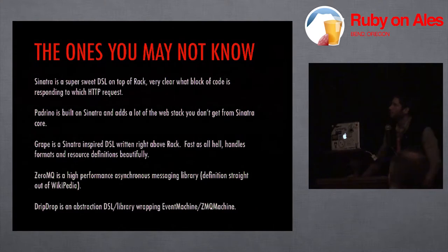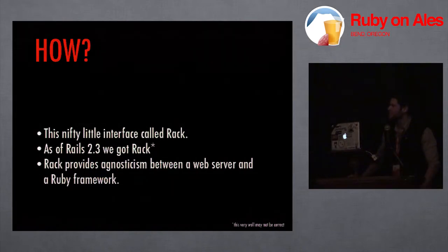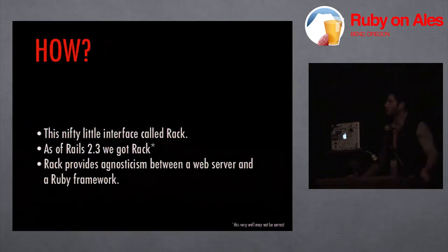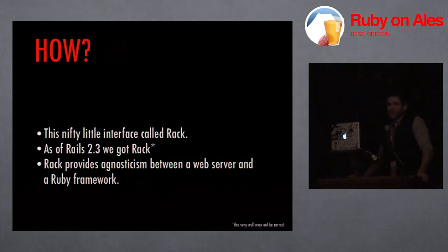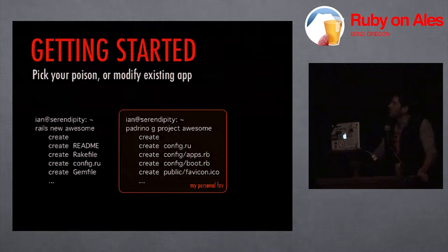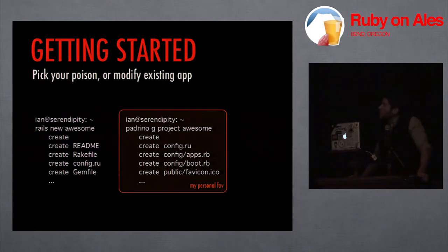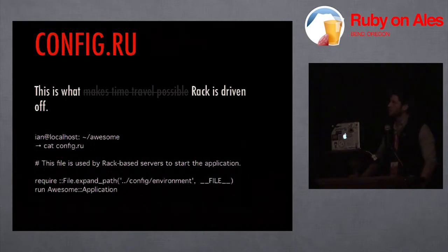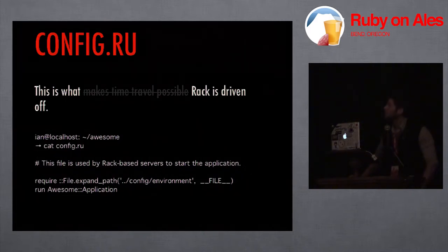How do we bundle all this together? There's a nice little interface called Rack. As of Rails 2.3, we switched over to Rack on Rails. Rack basically provides agnosticism between the web server and the application. Getting started, I tend to prefer Padrino at this point, but since this is a Rails conference I did all the examples in Rails. For people who don't spend enough time in Rack — config.ru is kind of what Rack is driven off of. If you look at the default config.ru for Rails, it's pretty basic.